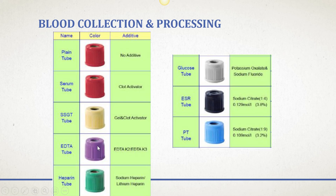The purple or lavender top tube is used for most white blood cell counts and differentials; the anticoagulant in it is EDTA. The green top contains sodium heparin or lithium heparin. The gray top has potassium oxalate and sodium fluoride. The black and blue tops both contain sodium citrate at different ratios. We also have pink tops, which are used for neonatal testing and blood banking.